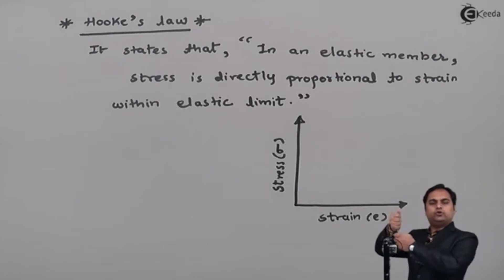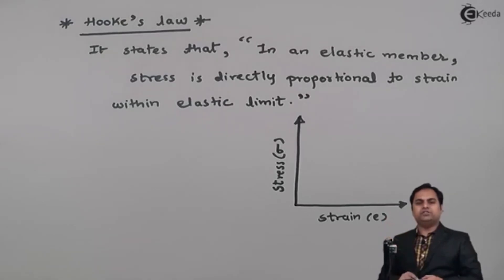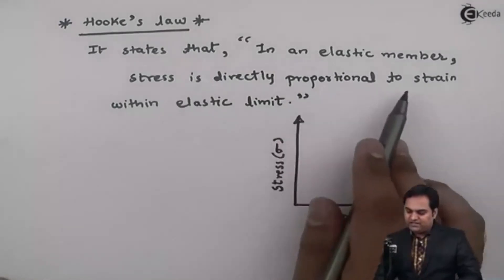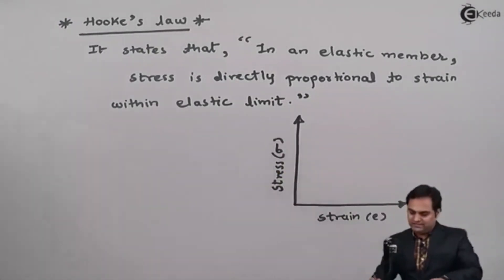If I am pulling this rod and when the material is elastic, then at the point of application when the load is applied then this shape of the rod will change and when the load is removed it will regain its original shape. So in an elastic member stress is directly proportional to strain within the elastic limit.